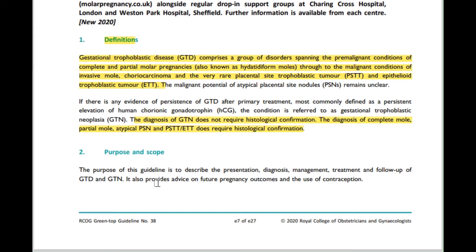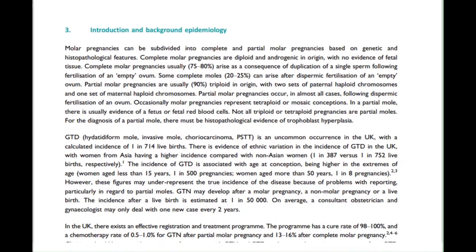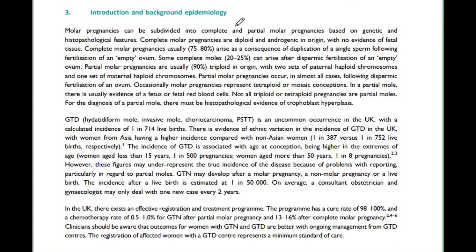Next, purpose and scope — read in the first read, read in the second one, just ignore in the third. This part here is really important: molar pregnancies, subdivided into complete and partial. Description about both pregnancies and percentages are mentioned. I've highlighted a few important things.